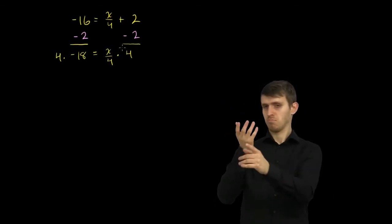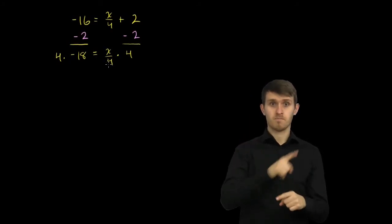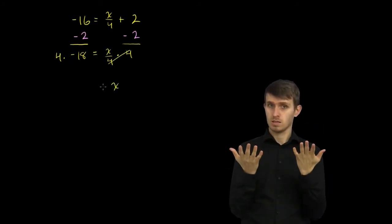The x over 4 times 4, that cancels out. You divide something by 4 and multiply by 4, you're just going to be left with an x.